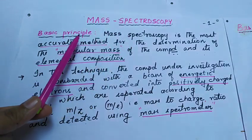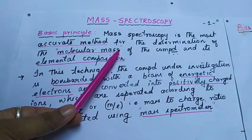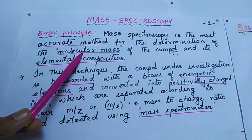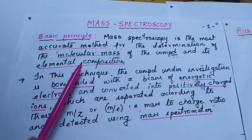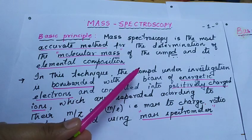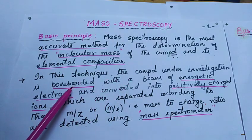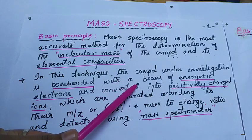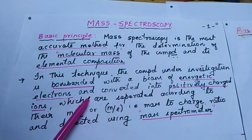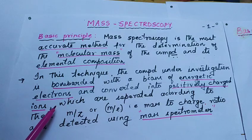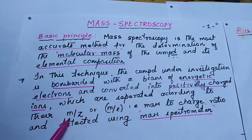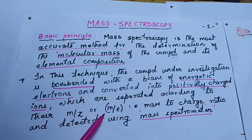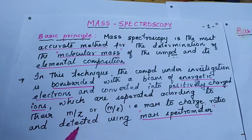Now let us understand the basic principle behind mass spectroscopy. Mass spectroscopy is the most accurate method for determination of molecular mass of a compound and its elemental composition. In this technique, the compound under investigation is bombarded with a beam of energetic electrons and converted into positively charged ions which are separated according to their m/z or m/e, that is mass to charge ratio, and detected using a mass spectrometer.